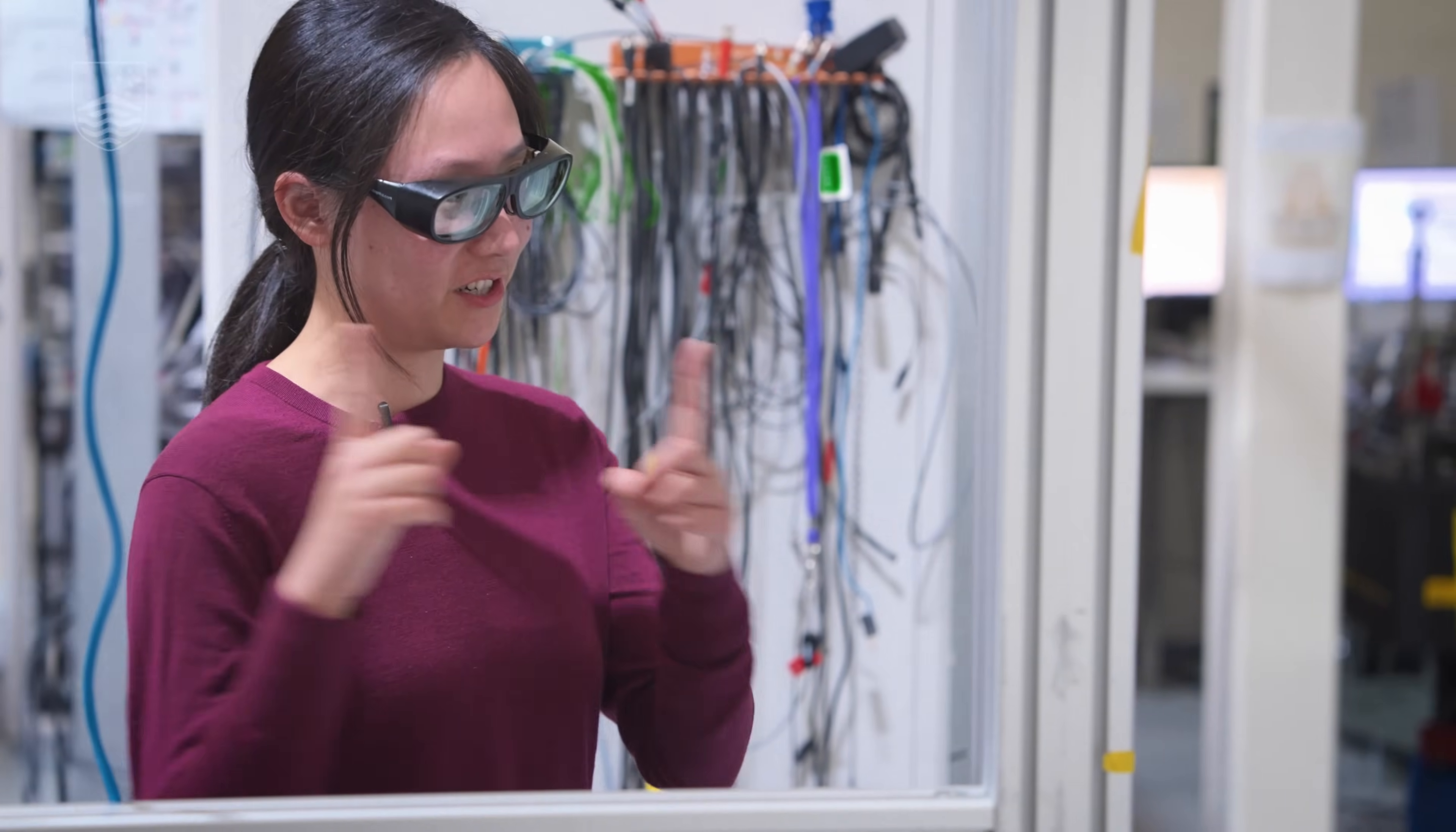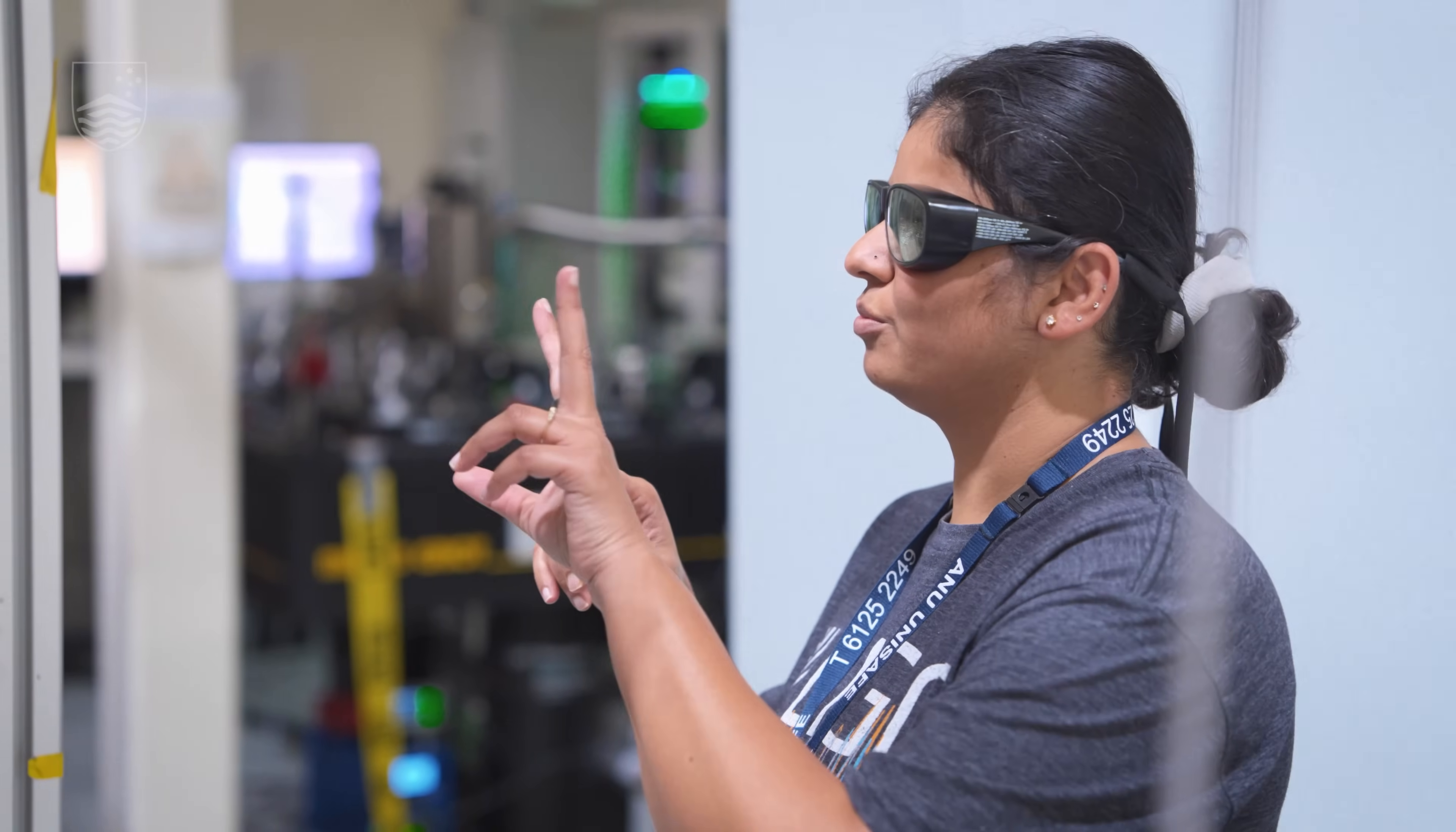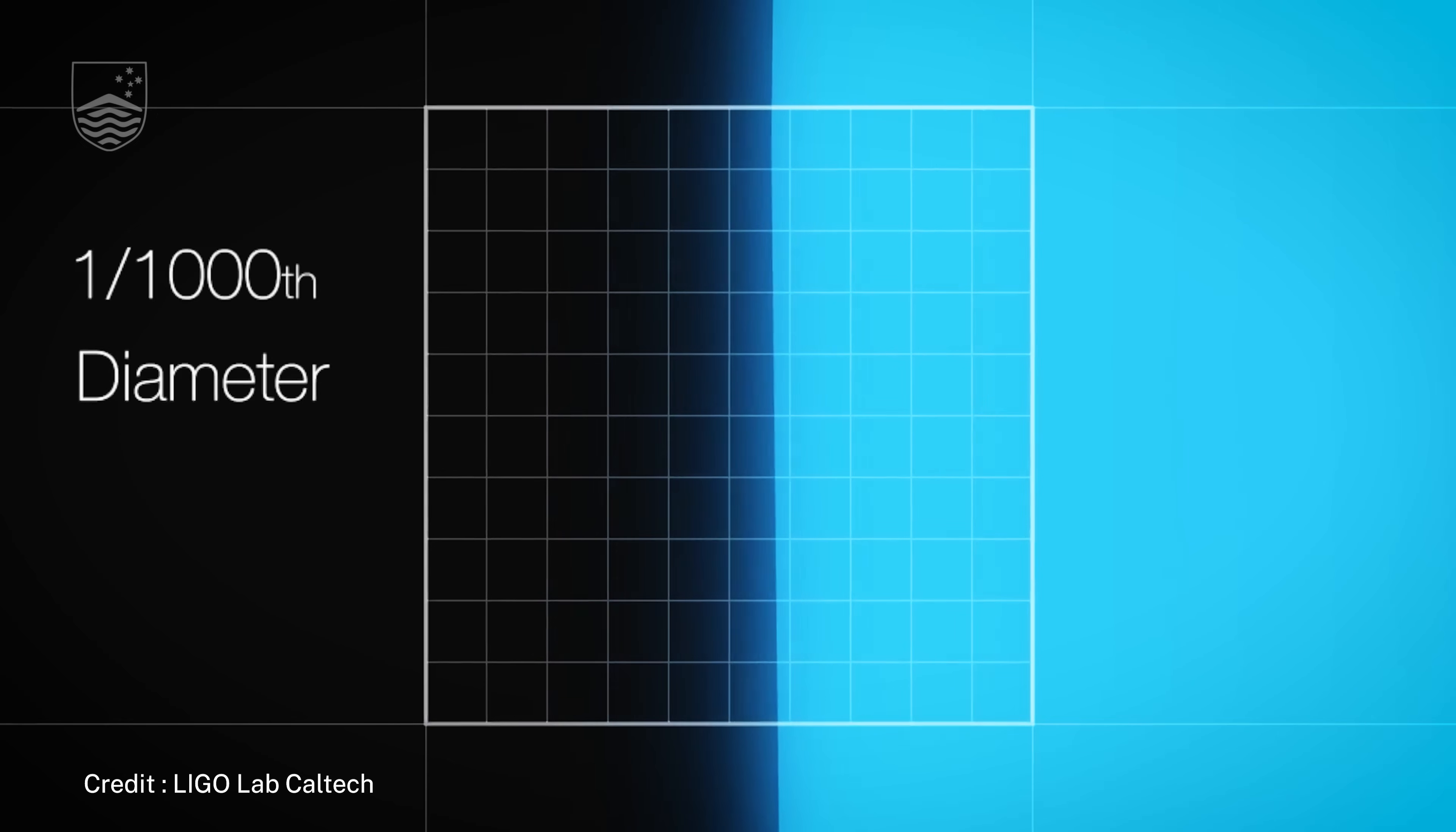That sounds like a reasonable thing to do, except when you realize just how small this effect is. A passing gravitational wave will change the separation between two objects which are say four kilometers apart by less than a thousandth of the size of a proton. That's ridiculously small.